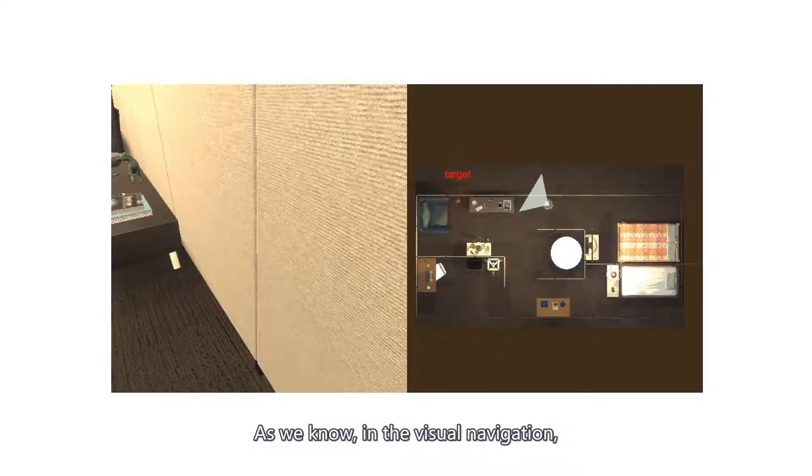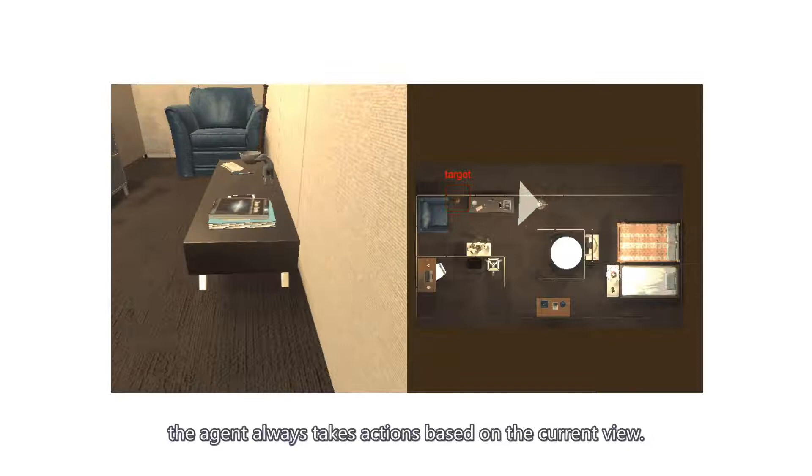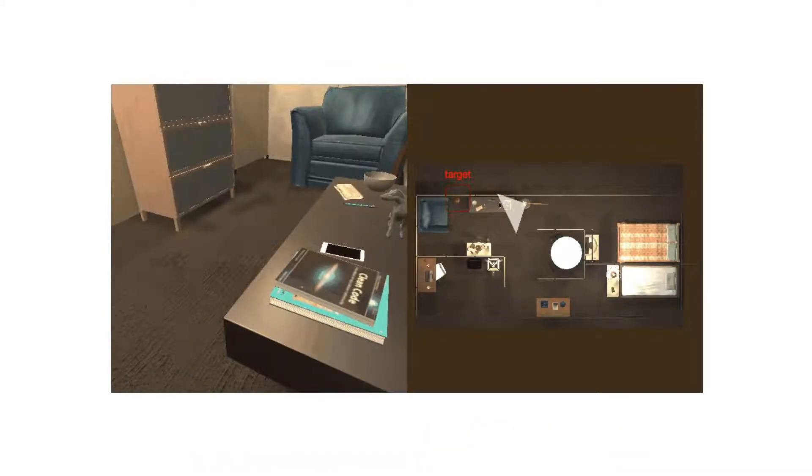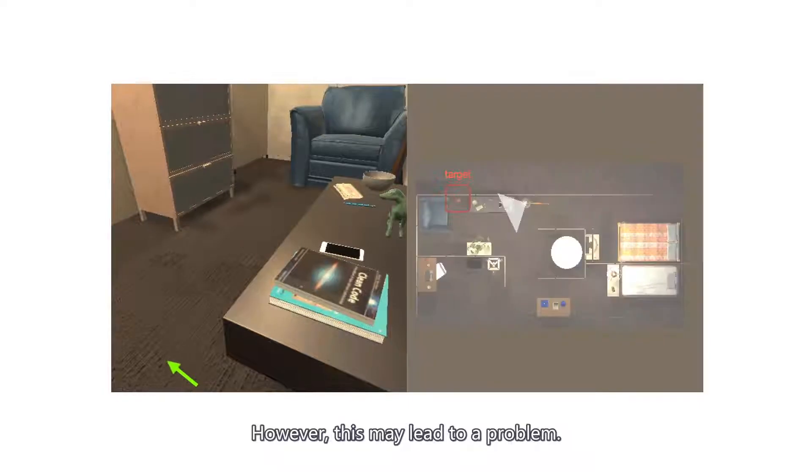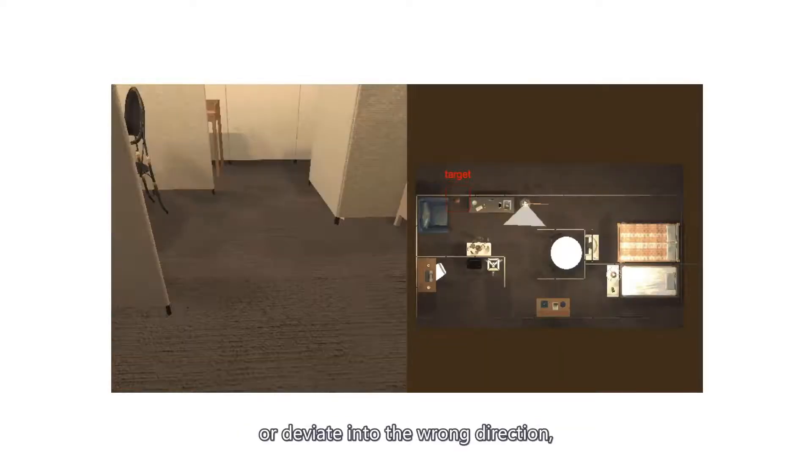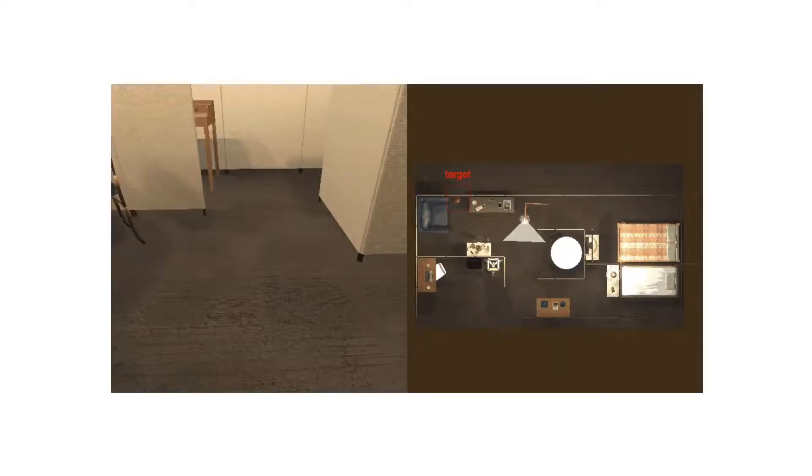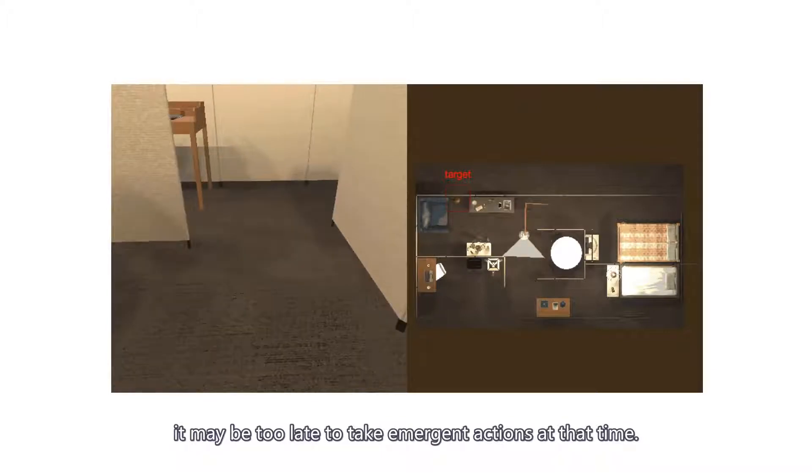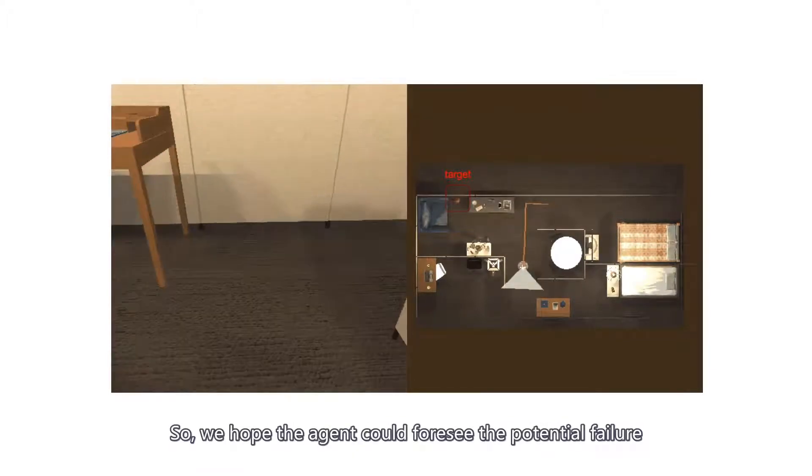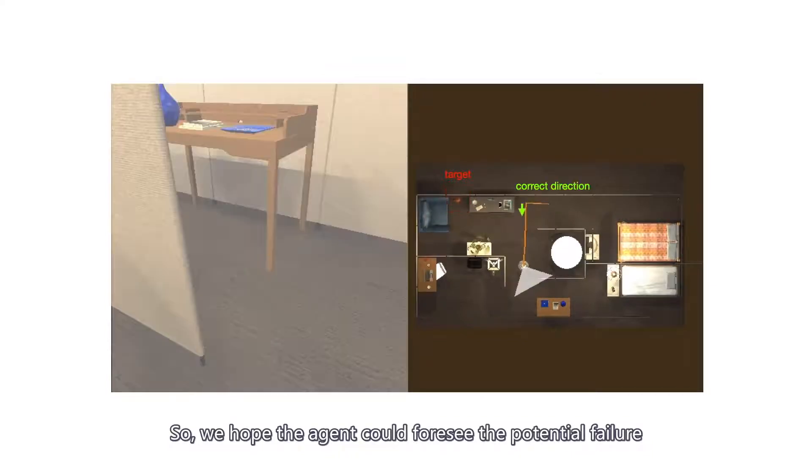As we know, in visual navigation, the agent always takes actions based on the current view. However, this may lead to a problem, like when the obstacle is coming up or when the agent is about to get stuck or deviate into the wrong direction. It may be too late to take emergency actions at that time. So, we hope the agent could foresee the potential failure and make the plan in advance.